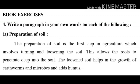The preparation of soil is the first step in agriculture, which involves turning and loosening the soil. This allows the roots to penetrate deep into the soil. The loosened soil helps in the growth of earthworms and microbes and adds humus.